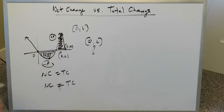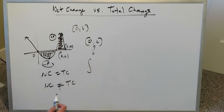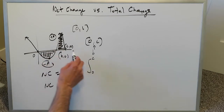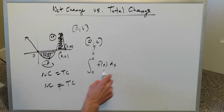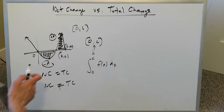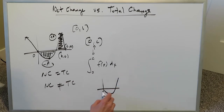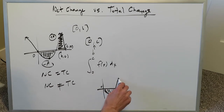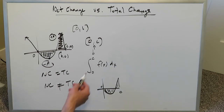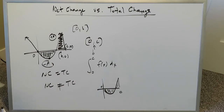The net change is the difference between the negative and positive areas added together. But you don't need to worry about adding or subtracting when doing an integral for net change. The integral from zero to c of f of x automatically captures both the negative and positive portions of the curve over that interval — so you just perform the definite integration as normal.